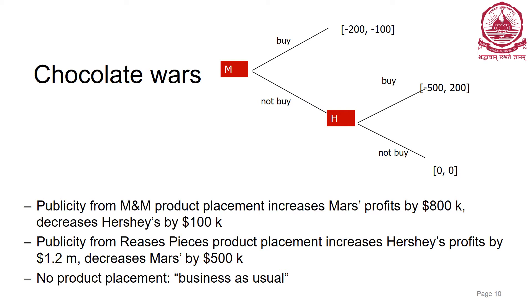If Mars buys the offer they pay 1 million but get 800K in profits, so net is minus 200K. Without doing anything, Hershey loses 100K worth of customers, so minus 100. When Mars did not buy, Hershey is given a chance. If Hershey also did not buy, it is business as usual: 0 comma 0. If Hershey agrees to the offer, Mars loses 500K for doing nothing, and Hershey nets 200K profit — paying 1 million but earning 1.2 million in return.